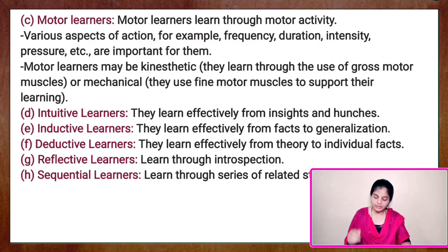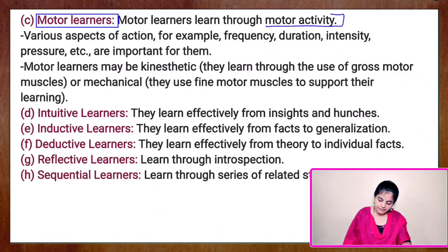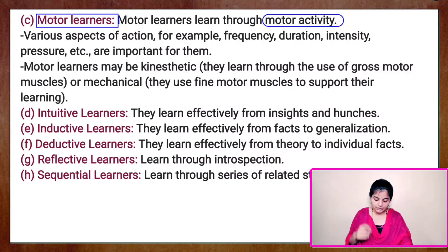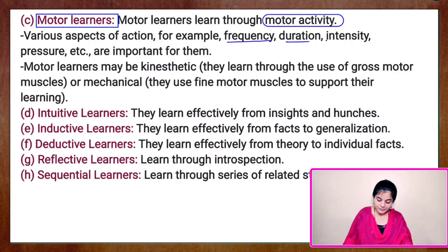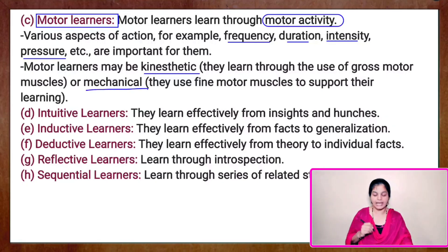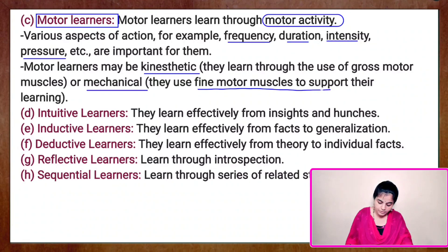The third type is motor learners. Motor learners can learn through motor activity — they learn with the help of actions using their hands, or certain movements when they are involved in the learning process. The various aspects important for these learners are frequency, duration, intensity, and pressure. These learners may be kinesthetic, meaning they learn through the use of gross motor muscles with the help of hands and legs and movements, or they can be mechanical, where they use fine motor muscles to support their learning.